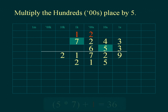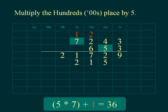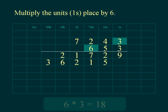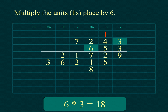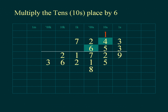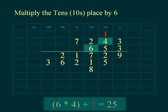Multiply the thousands of the multiplicand; add the thousands carried from the hundreds place. Place the result below the line in the hundreds of the tens place. Multiply the tens of the multiplicand; add the tens carried from the units place. Place the units of the result below the line in the thousands place and place the tens of the result under the hundreds place.